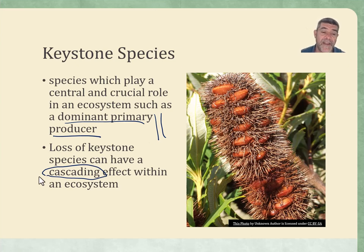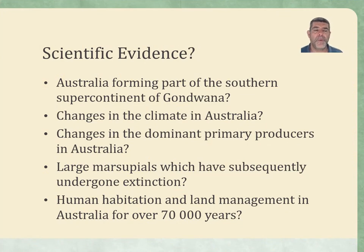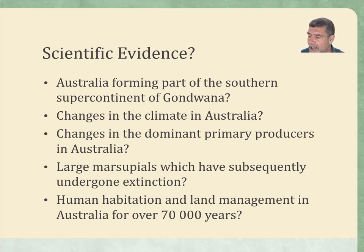The loss of the keystone species can have a cascading effect within ecosystems. So once we start to affect one of these very important species in an ecosystem, the flow-on effects to all of the other species through the food webs can be devastating. What I thought might be useful for you is to see if you can think about some of the scientific evidence for some of the questions or statements that we've raised in this little section of the module.